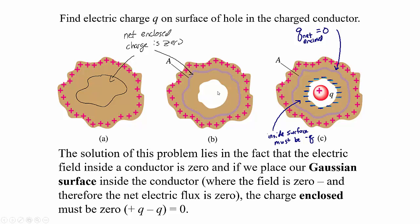When there was no charge in the cavity, there was no charge pulled to the inside surface — all of the excess charge was on the outside of the conductor. But when I placed an additional positive charge in the center of that cavity, it pulled negative charge to the inside. There's still positive charge on the outside of that conductor, but the enclosed charge, when I draw a Gaussian surface inside the conductor, must total zero.